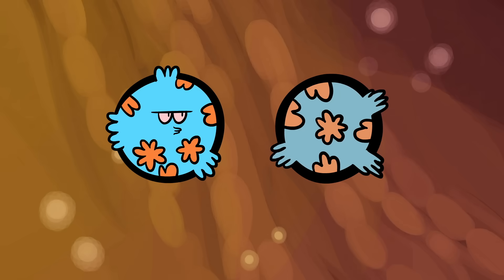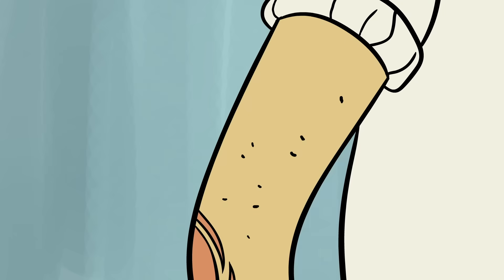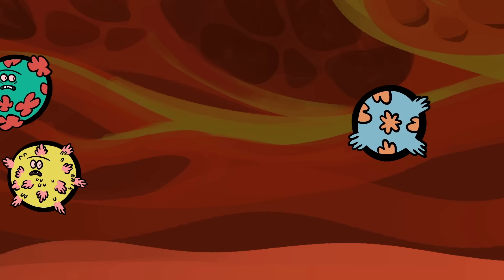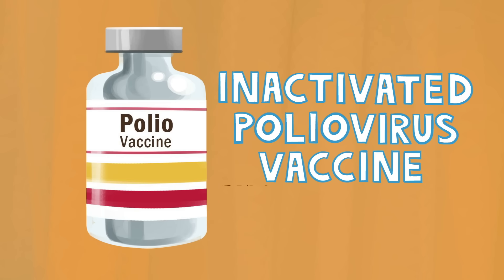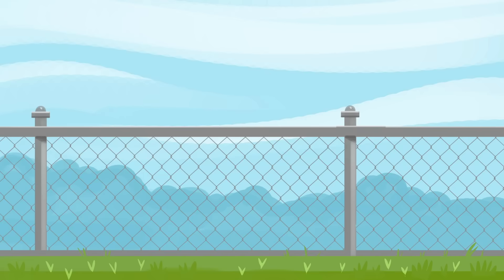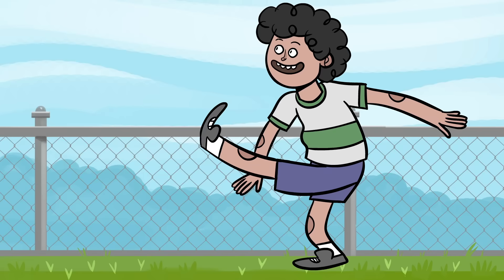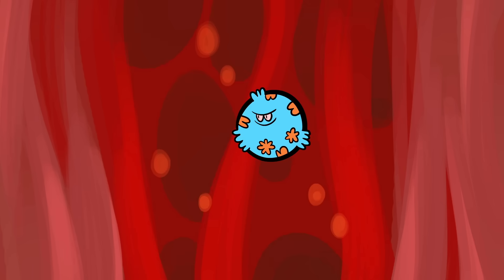He created an inactivated version of the virus that, when injected, prevented all three strains from causing paralysis. However, this inactivated poliovirus vaccine, or IPV, didn't stop poliovirus from living in our bodies and spreading to others.